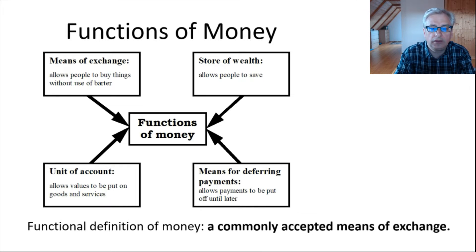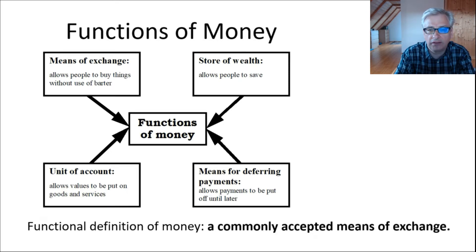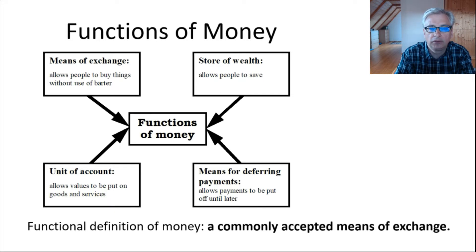If you give a bit of thought to that, you will probably come up with four ideas. The first idea is money serves us as a means of exchange. It allows us to get goods, to exchange one good for another using money as a kind of transmission — you sell something, you get money, and you use this money to buy something else.